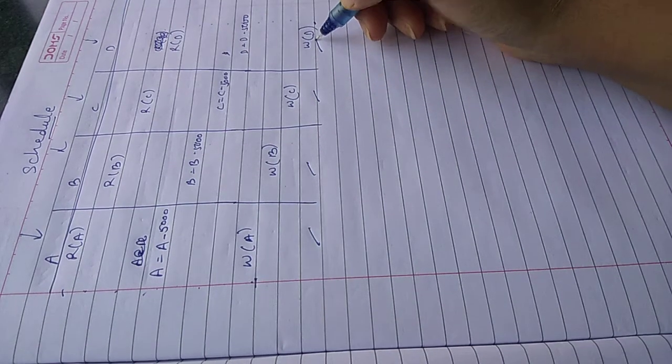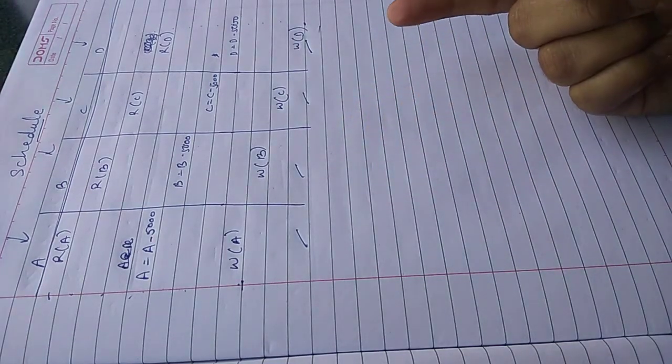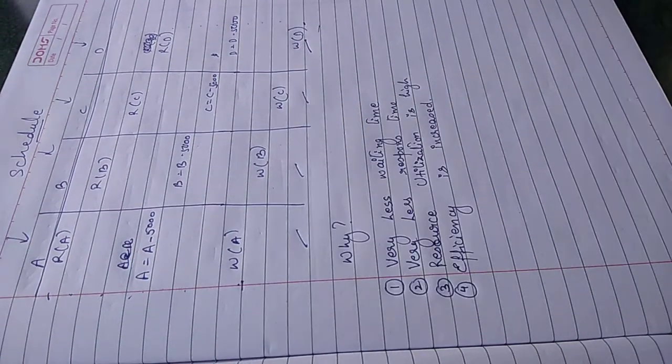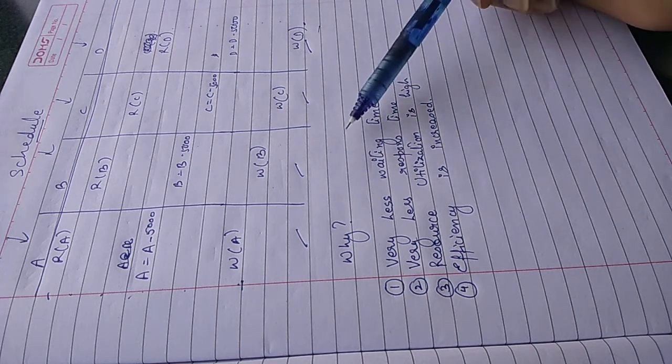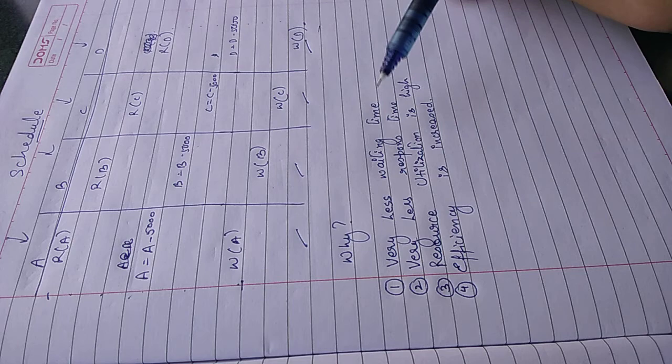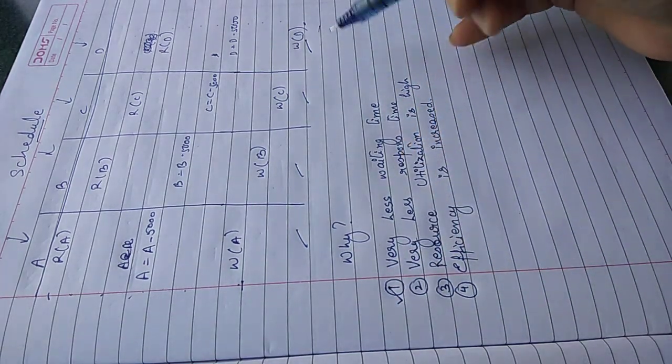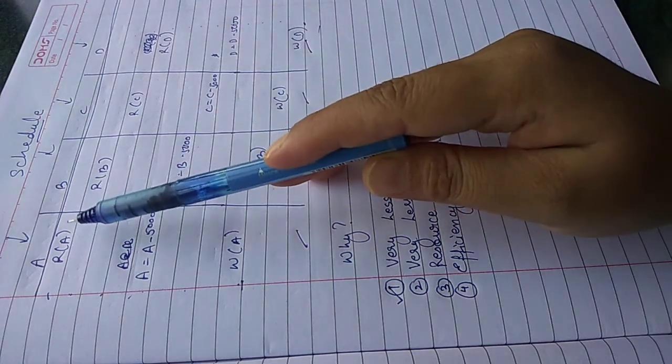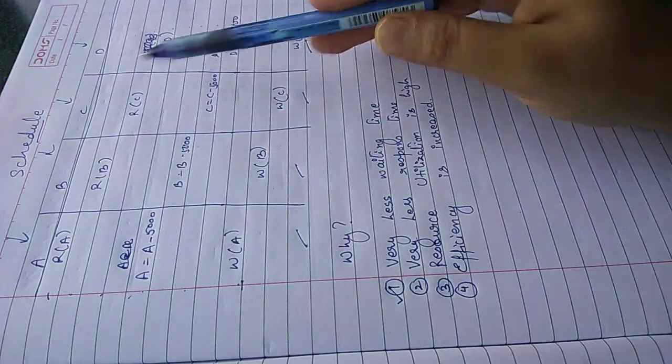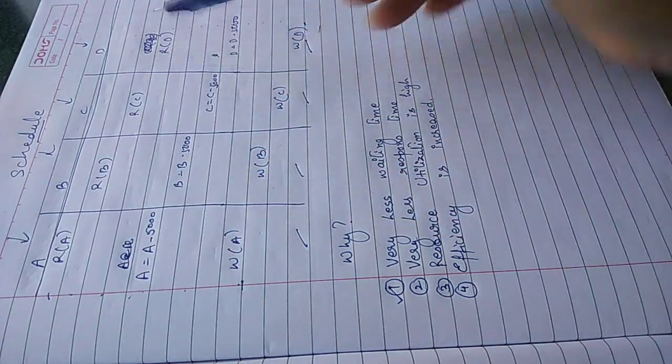Now we will come to why we do concurrent transactions. These are points for why we execute multiple transactions. The first point is very less waiting time. Waiting time is decreased. How much D had to wait here for three transactions, but here how much to wait? Only for three instructions. The time is very less here. Now very less response time means the DBMS is responding quickly to transactions.